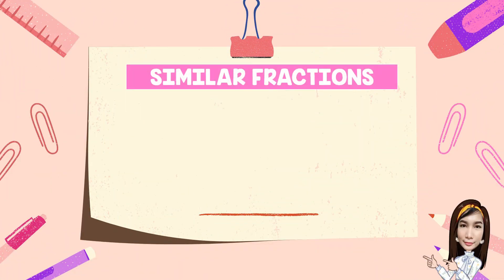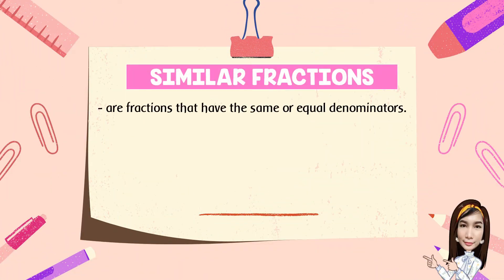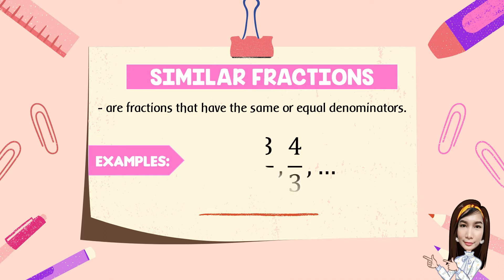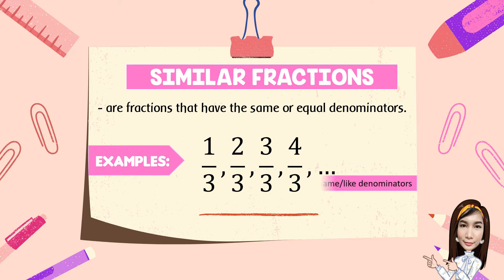Similar fractions are fractions that have the same or equal denominators. Examples are 1 third, 2 thirds, 3 thirds, 4 thirds, and so on. As you noticed, we have the same or like denominators.